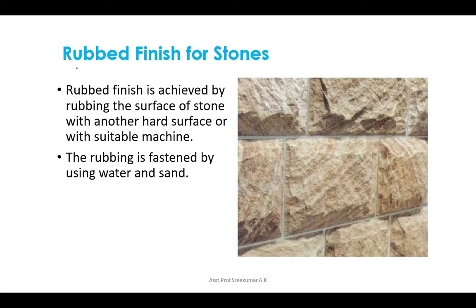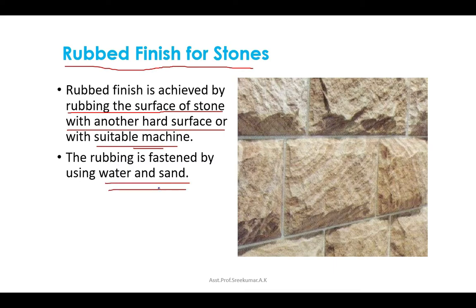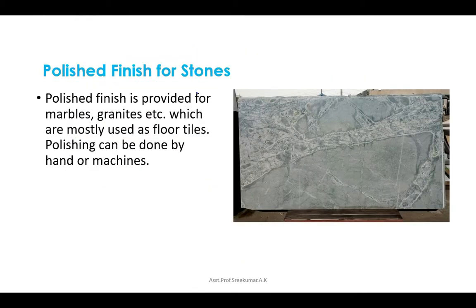The rubbed finish is obtained by rubbing a piece of stone on a leveled surface, and can also be done with the help of a machine. Water and sand may be used to accelerate the rubbing process. The polished finish is used in marbles, granite, etc. These are polished either manually or with the help of machines, resulting in a glossy surface.